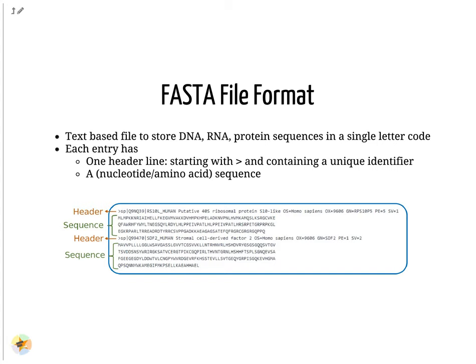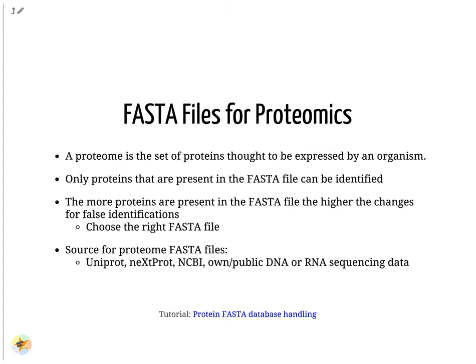The protein sequence database is stored in a FASTA file — a text-based file to store DNA, RNA or protein sequences in single-letter code. Each entry contains a header line and the sequence; the header line starts with a greater-than sign followed by a unique identifier. A proteome is the set of proteins thought to be expressed by an organism, and only proteins present in the FASTA file can be identified. However, the more proteins are present in the FASTA file, the higher the chances for false identifications and the longer the computation time. Sources for proteome FASTA files include UniProt, neXtProt, NCBI, or DNA and RNA sequencing data.